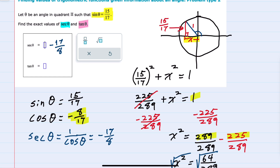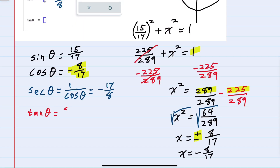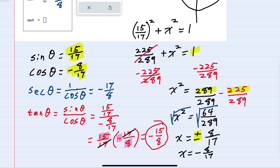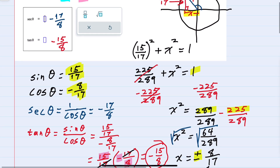And then the tangent of theta. We know that the tangent of theta is the sine of theta over the cosine of theta, and we know both values. Substituting in: 15/17 over negative 8/17 is the same as 15/17 times the reciprocal of that denominator, negative 17/8. With canceling, the tangent of theta is negative 15 in the numerator and 8 in the denominator. So negative 15/8 is our tangent of theta, and we have found both tangent and secant.